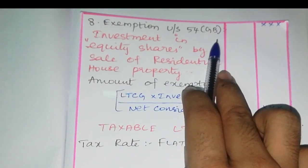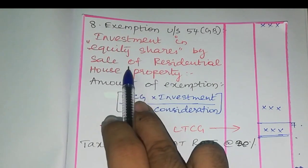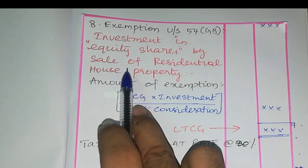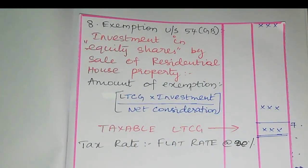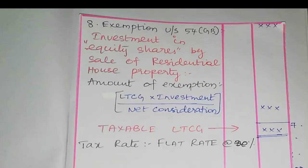Exemption Under Section 54GB: whenever a long term capital asset — i.e., a residential house property — is sold, and if you invest in an eligible company's equity shares, you can apply this exemption. To calculate the amount of exemption: Long Term Capital Gain multiplied by Investment, divided by Net Consideration. This gives the actual amount to be exempted under Section 54GB. So, in summary, exemptions exist under Sections 54, 54B, 54D, 54F, 54EC, 54G, 54GA, and 54GB.